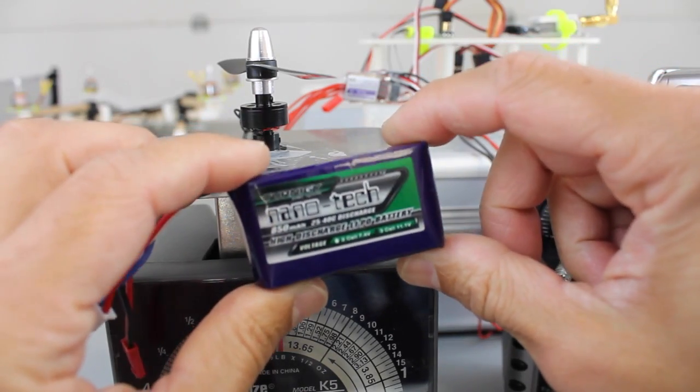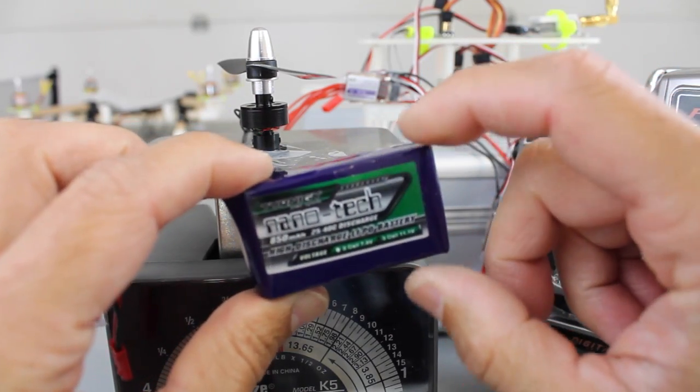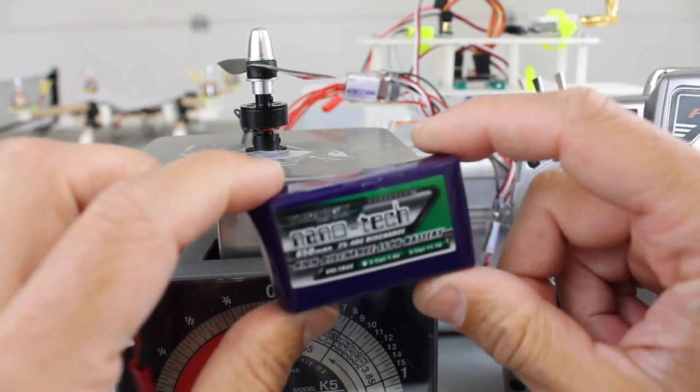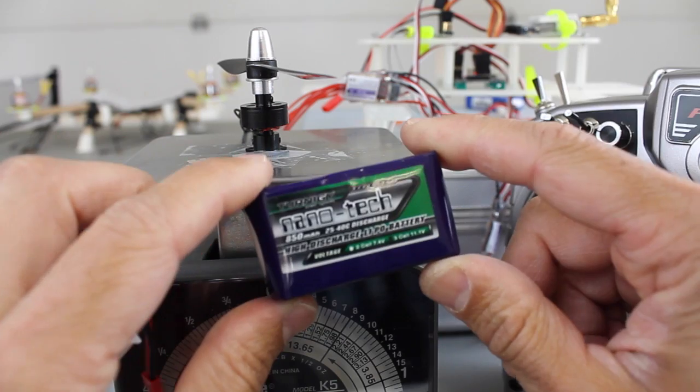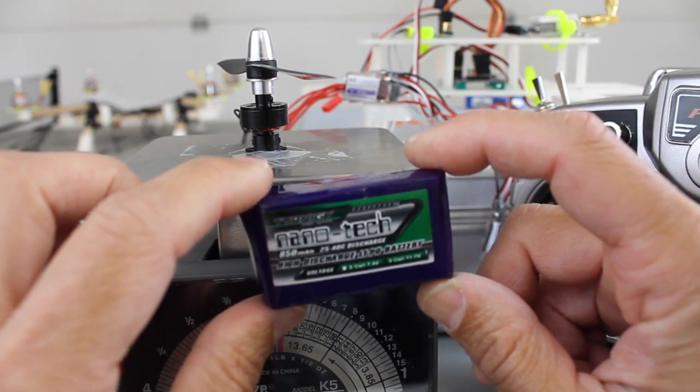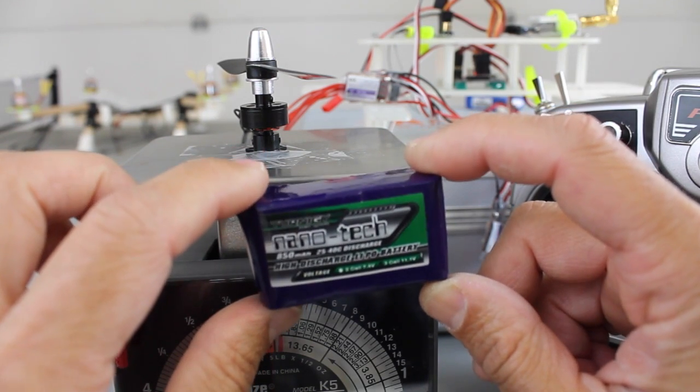But like I said really want to try this 3S so we're going to give it a go. Now this is an older battery. Definitely larger profile. There are 850 milliamp 3S lipos that are smaller and lighter than this. So definitely something else that I will consider moving forward.